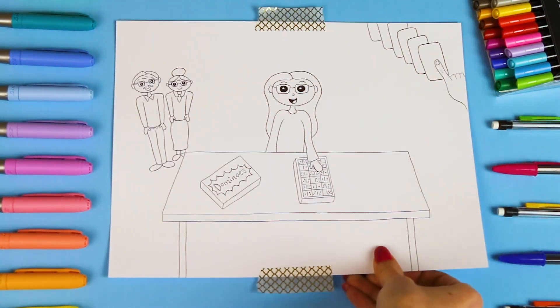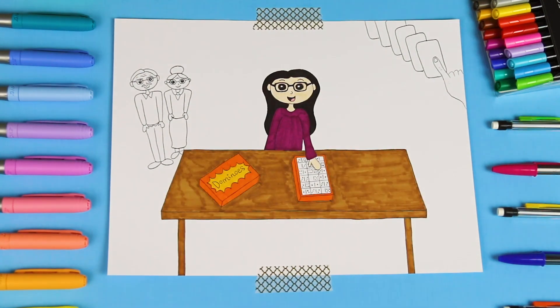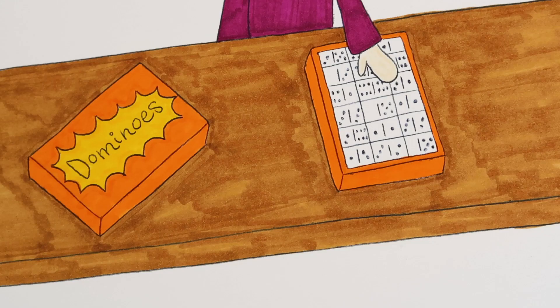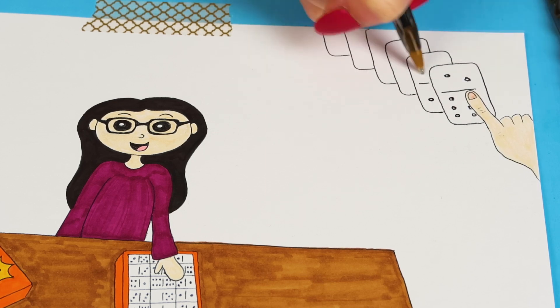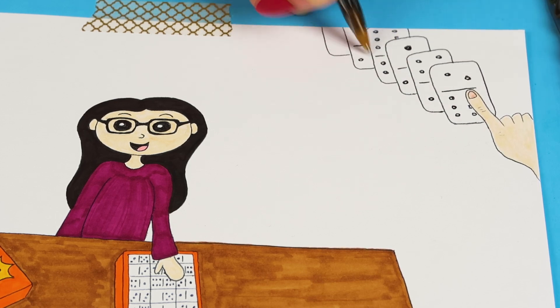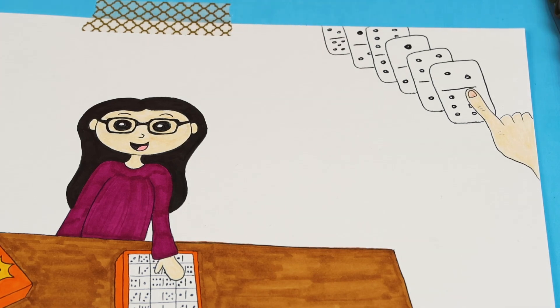I first got into dominoes when I was 9 years old. My grandparents had a standard 28-piece domino set with the black dots. Bored one day, I set the dominoes up and then knocked them down. I really loved watching them fall for some reason. It was kind of hypnotizing for me.